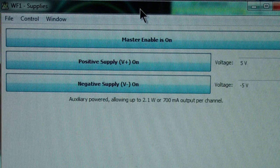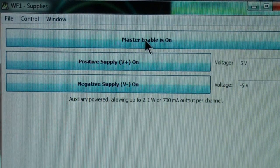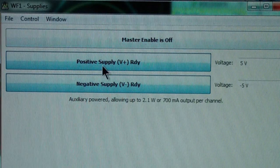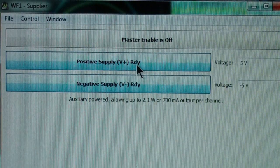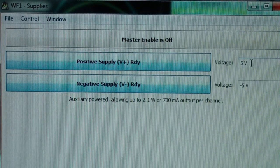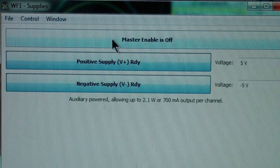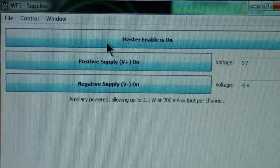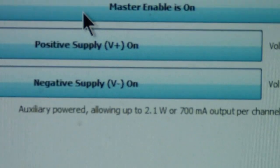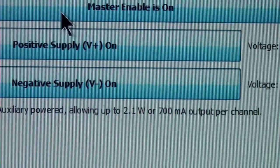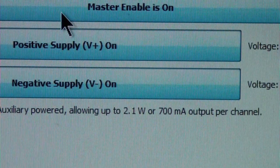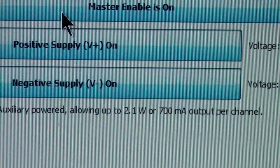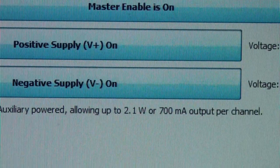Here is the power supply window. You'll notice that at the top it says master enable is on. I'm going to turn that off and now the circuit is not receiving power. You'll notice here it says that the positive supply is ready and the negative supply are ready. I have set them to 5 volts. When you click on this enable the power supplies get turned on. You'll notice it says auxiliary powered allowing up to 2.1 watts or 700 milliamps output per channel. That is a new feature of the Analog Discovery 2.